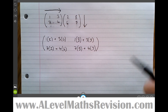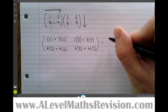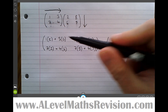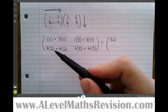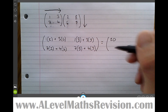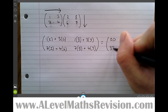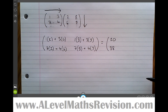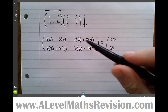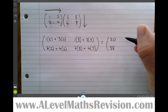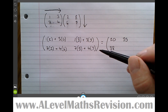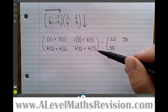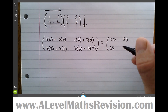And there we have our answer: two plus eighteen is 20, fourteen plus twenty-four is 38, eight plus twenty-seven is 35, and fifty-six plus thirty-six is 92.